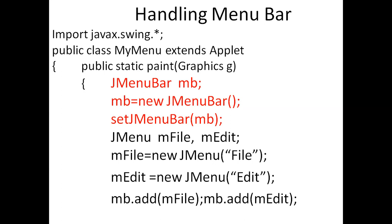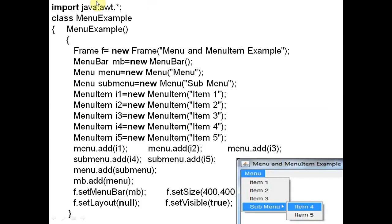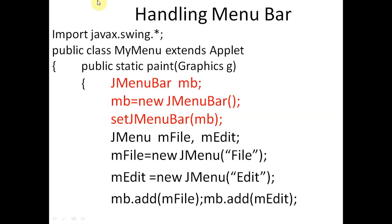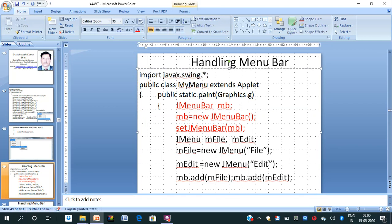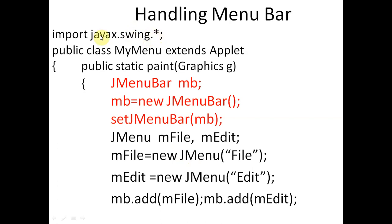Now I am giving one more example of the menu bar using the Applet approach with Java Swing. In the previous example we used AWT with 'import java.awt.*'. In Java Swing, classes are prefixed with 'J' — JMenuBar, JMenu, JMenuItem. For Java Swing we write 'import javax.swing.*', and the class MyMenu extends Applet.